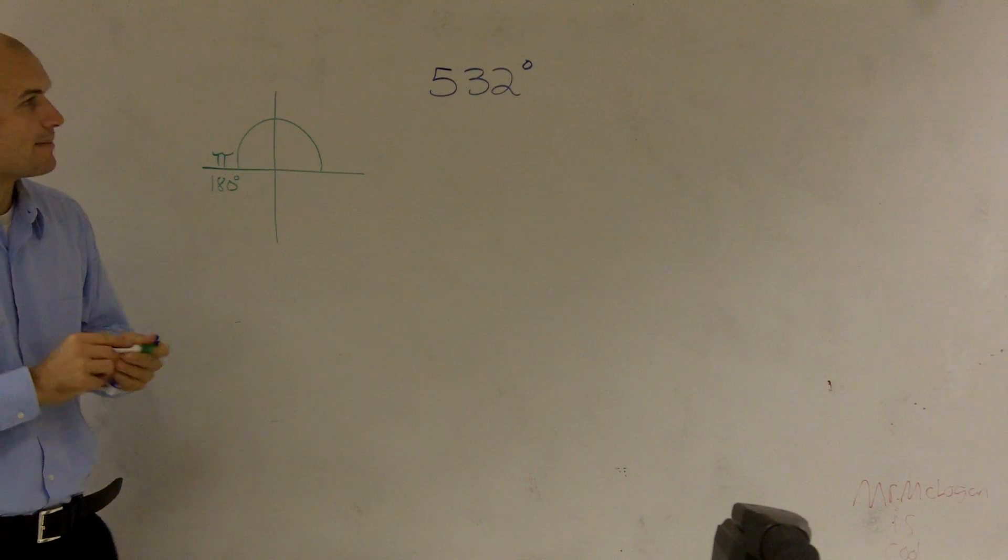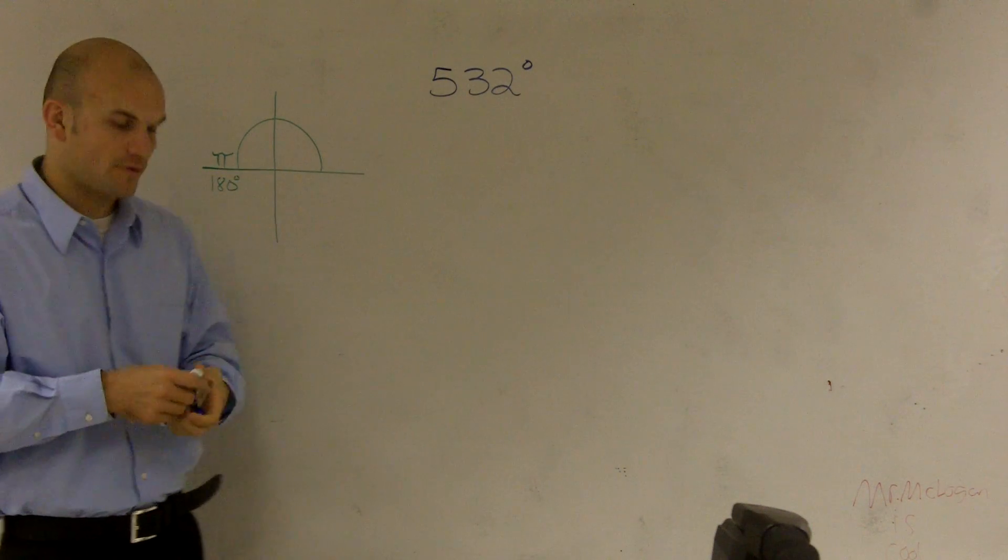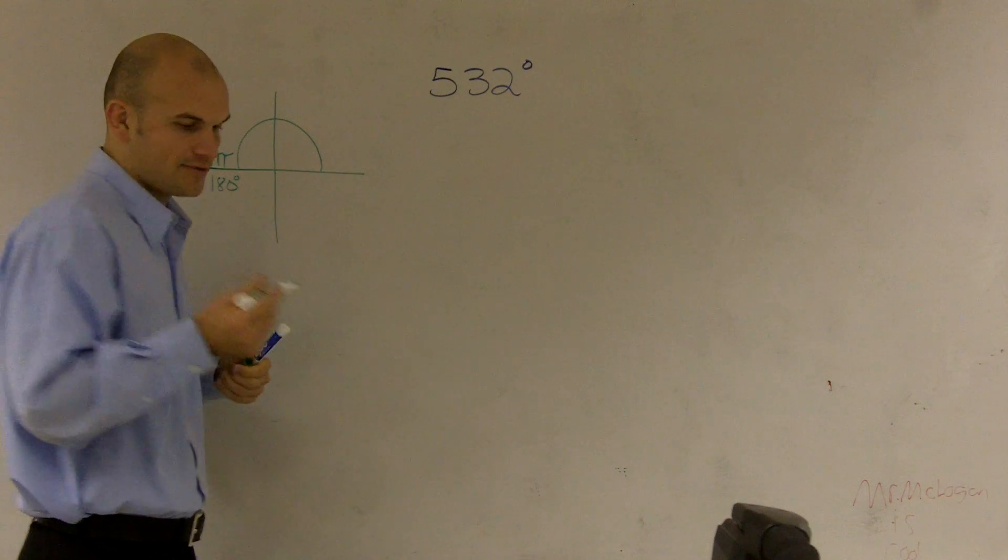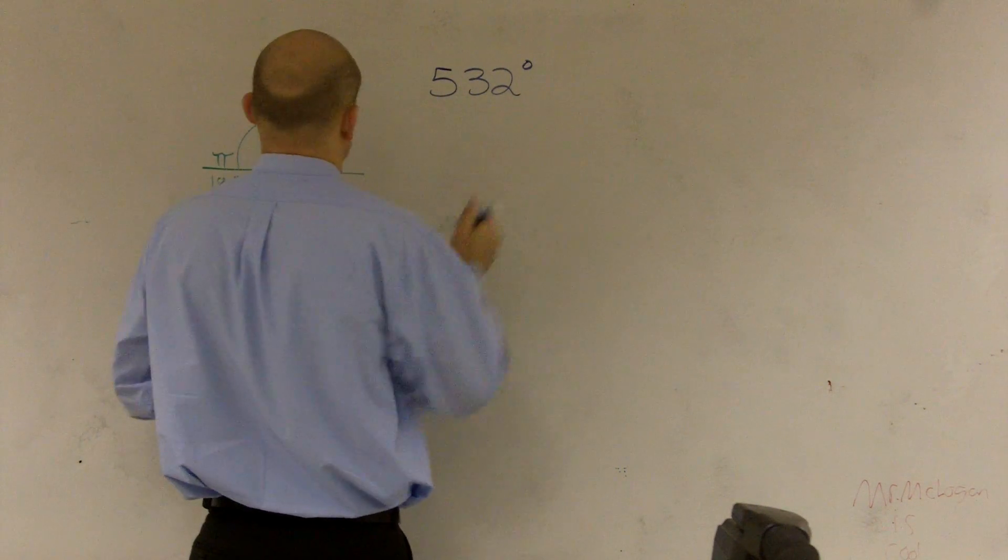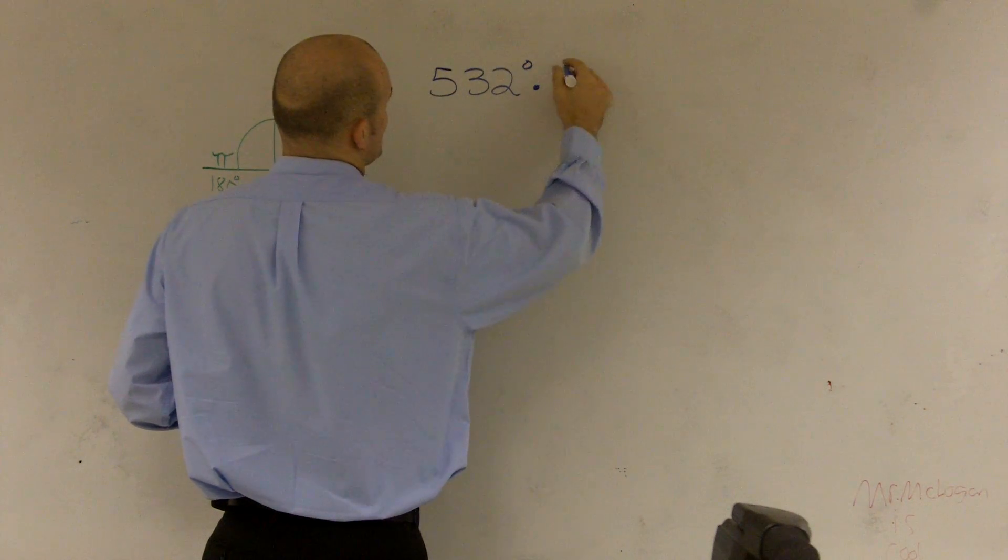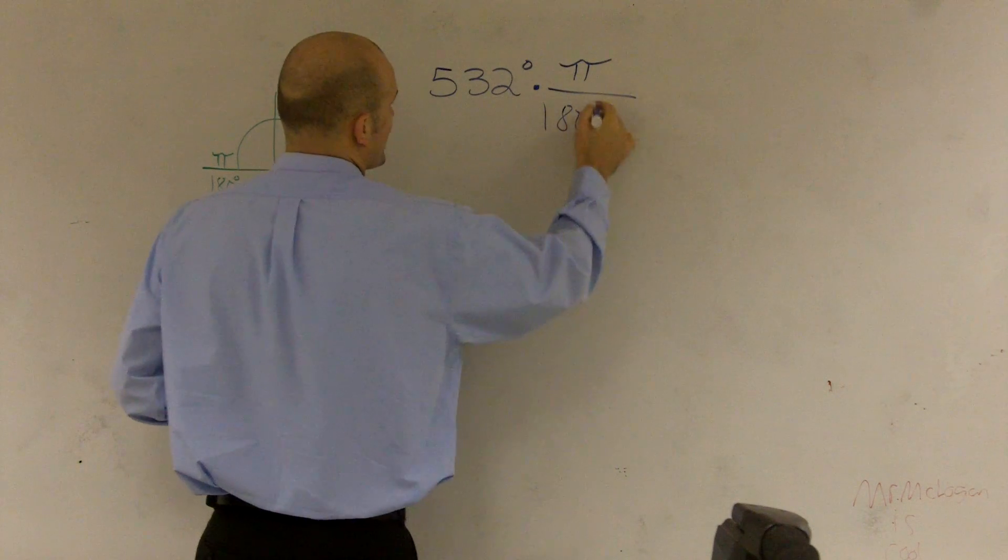So what I'll do is I'm going to multiply this degree term times the ratio of pi over 180. So I'm going to say 532 degrees times pi over 180 degrees.